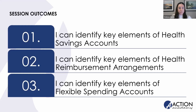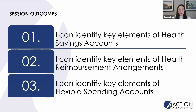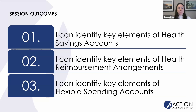Let's talk about our session outcomes for today. By the end of this session, we should be able to identify key elements of health savings accounts, key elements of health reimbursement arrangements, and key elements of flexible spending accounts. We'll get into some more specific categorized versions of HSAs and HRAs, but we will spend most of the time on those three main categories.